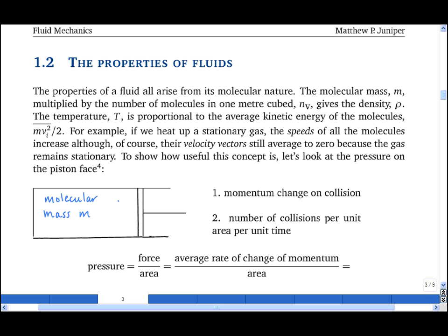So let's consider a molecule bouncing off the piston face, and for now we shall imagine that it bounces off elastically. The momentum change on collision is proportional to the mass of the molecule times its speed, and I shall use the index i there to represent each molecule with i from 1 to n.